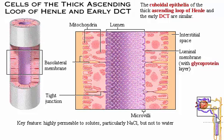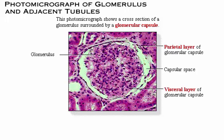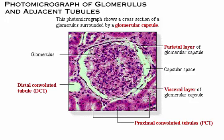This photomicrograph shows a cross-section of a glomerulus surrounded by a glomerular capsule. It also shows several proximal convoluted tubules and a single distal convoluted tubule. The microvilli in the lumen of the proximal convoluted tubules appear fuzzy because they do not stand up well to the slide preparation process. Notice the much clearer open lumen of the DCT, which is less obstructed because it has fewer microvilli.